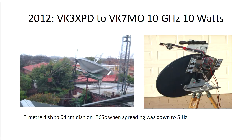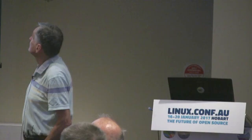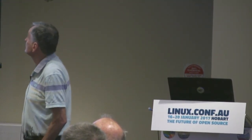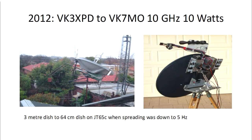The first time I went up to 10 GHz I was just using a little offset dish doing tests with Alan VK3XPD in Victoria, whose dish is a 3 metre dish. Alan makes things in real ham fashion — you can see there's a load of bricks on a lever trying to balance the weight of the dish. With that setup we got down to 10 watts. My system on the right is only a 64 centimetre dish, with a rifle scope on top which I use to track the moon manually.